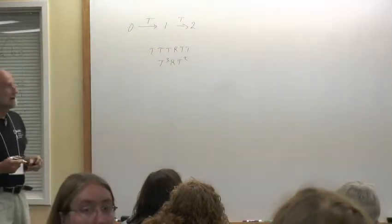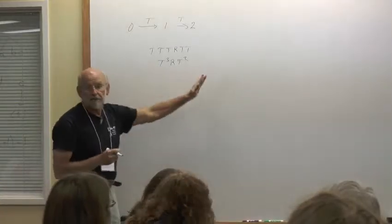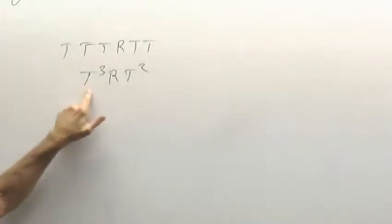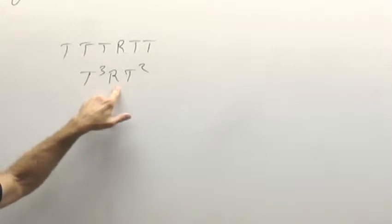So your convention is the first one is the one on the left. Right, I'm always going to go from left to right. So if I write it down this way, I'm reading it from left to right. So this says do a twist, a twist, a twist, then a rotate, then a twist, then a twist, and where are we?